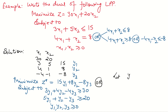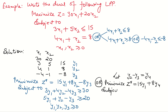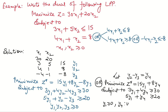We can take y2 − y3 = y4, because y2 and y3 appear together in all equations. So, Minimize z* = 15y1 + 8y4, subject to 3y1 + 4y4 ≥ 30 and 5y1 + y4 ≥ 20, where y1 is positive and y4 is unrestricted in sign. This is because we don't know the relationship between y2 and y3: if y2 > y3 then y4 is positive, if y2 < y3 then y4 is negative. That's why y4 is unrestricted in sign.